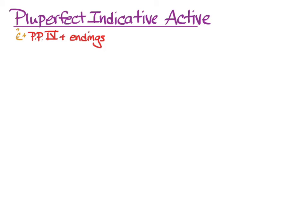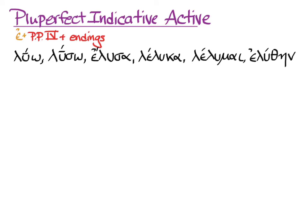Here are the principal parts of luo. We go to the fourth principal part, we take off that alpha to get our stem — leluk — and then we add the augment to it.